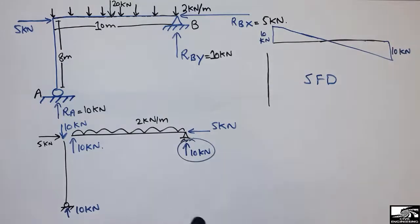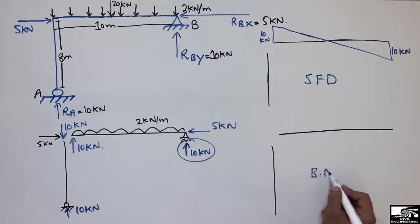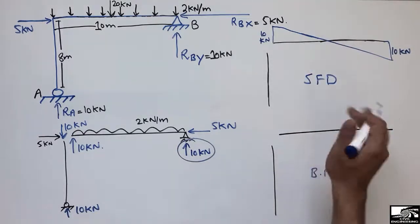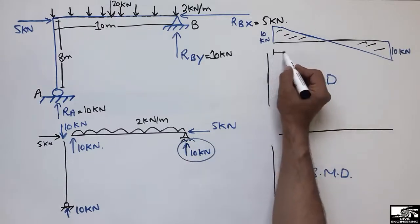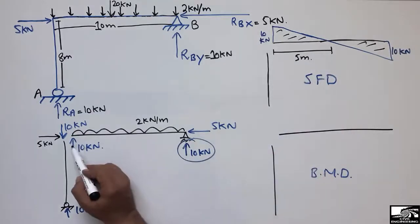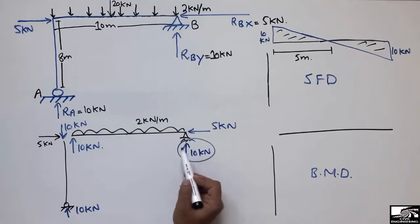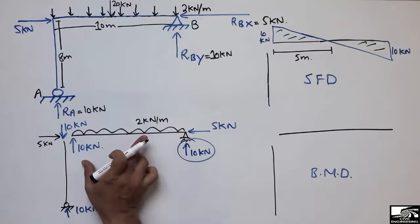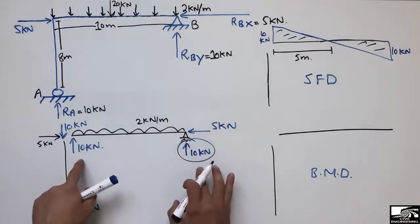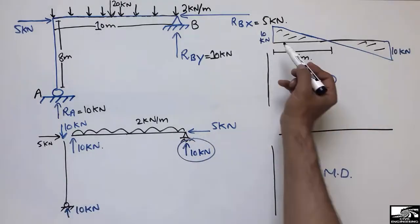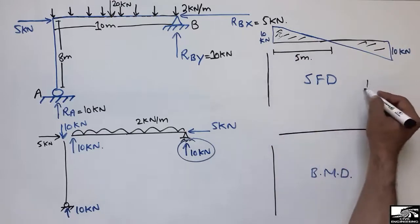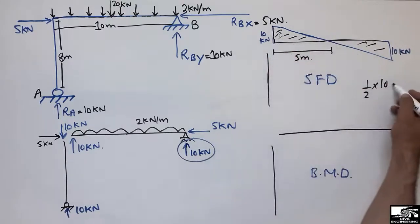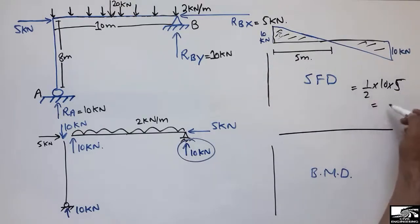To draw the bending moment diagram, I draw reference lines for the column and the beam. From the shear force diagram, we find the area of the triangles. The shear force is zero at the midpoint, at a distance of 5 meters, because the same 10 kN load is resisted equally by both supports. The area of the triangle is ½ × 10 × 5 = 25 kNm.